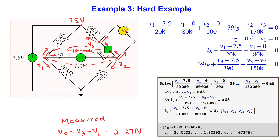In this case, because of the voltmeter we have an additional essential node V3 in the circuit, and this appears in the equations as well. Please pause the video now if you wish to study these calculations in more detail.